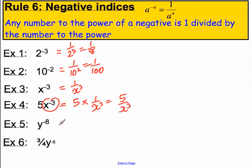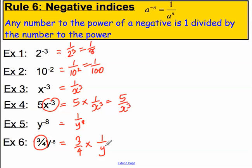Y to the minus 8 — well that's 1 over Y to the positive 8. And last one: 3 quarters times Y to the minus 8. Well that must be 3 quarters times 1 over Y to the 8. Using the same approach as the previous example: 3 times 1 is 3, and 4 times Y to the 8 is simply 4Y to the 8, giving us 3 over 4Y to the 8 in negative index notation.